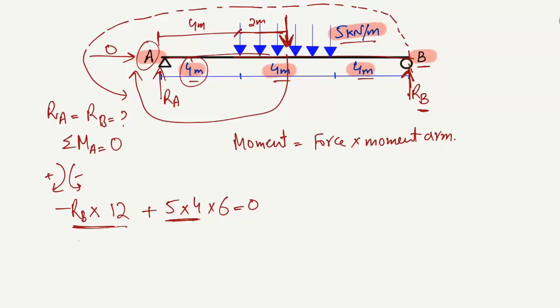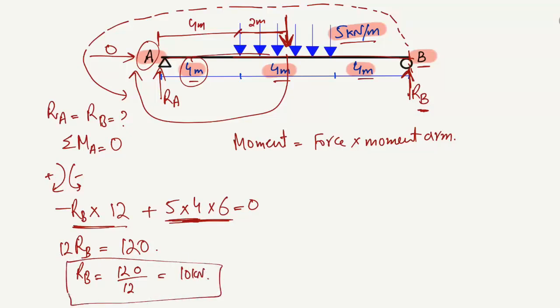Shifting the Rb term to the right side, we get: 12 × Rb = 5 × 4 × 6 = 120. Therefore, Rb = 120 ÷ 12 = 10 kN. So the support reaction at B is 10 kN. Now we need to find Ra.